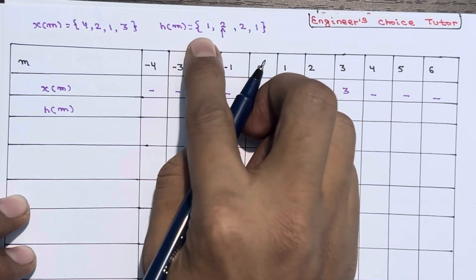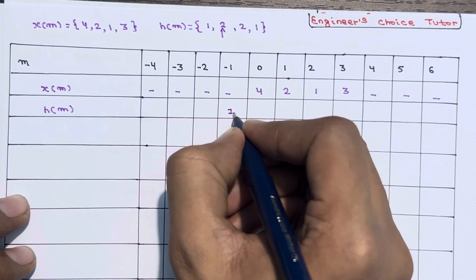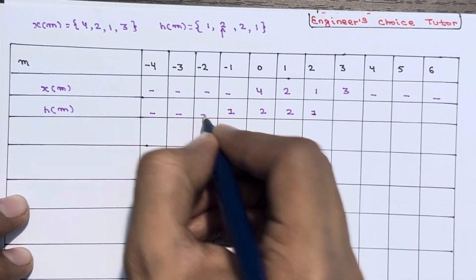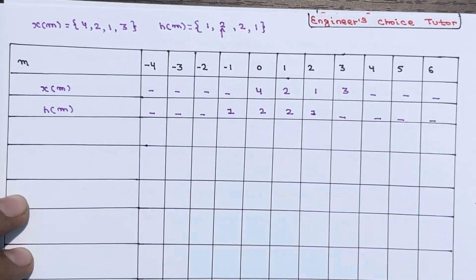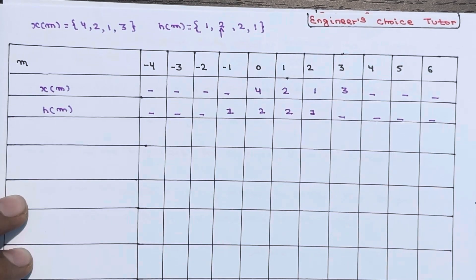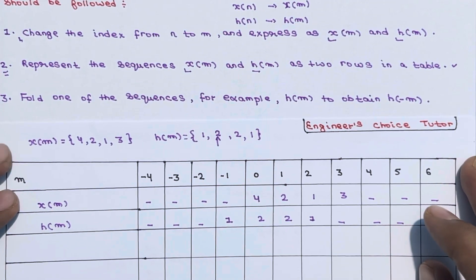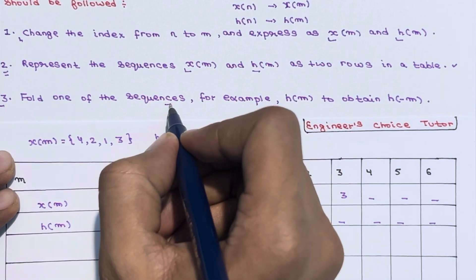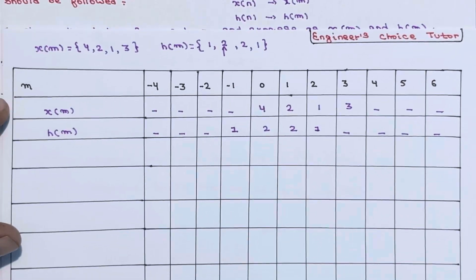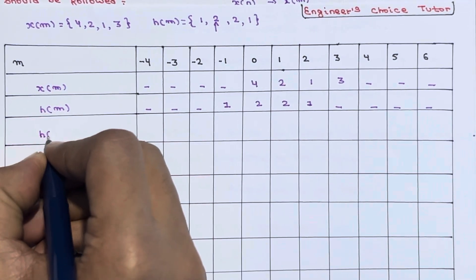Step three: fold one of the sequences — for example h[m] — to obtain h[-m]. When we fold h[m], the sequence reverses direction. So h[-m] has values: at m=-2 we get 1, then 2, 2, 1 going left. This is simply the folded version of h[m].